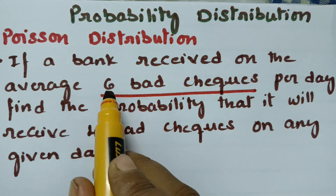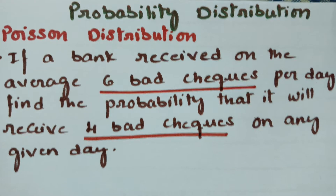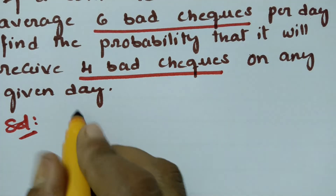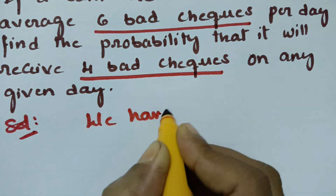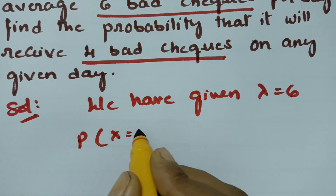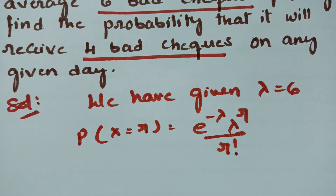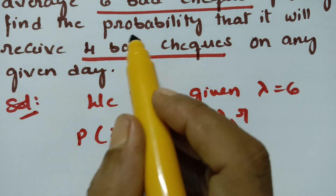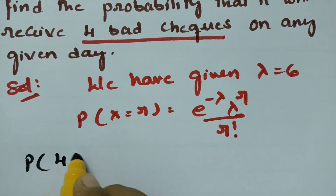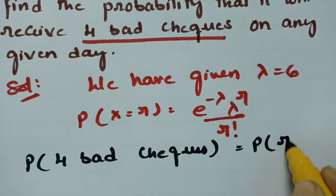Here, mean lambda is given as six. We need to find the probability that it will receive four bad checks on any given day. The Poisson distribution formula is P(x = r) = e^(−λ) · λ^r / r!. Since we want four bad checks, we select r equal to four.